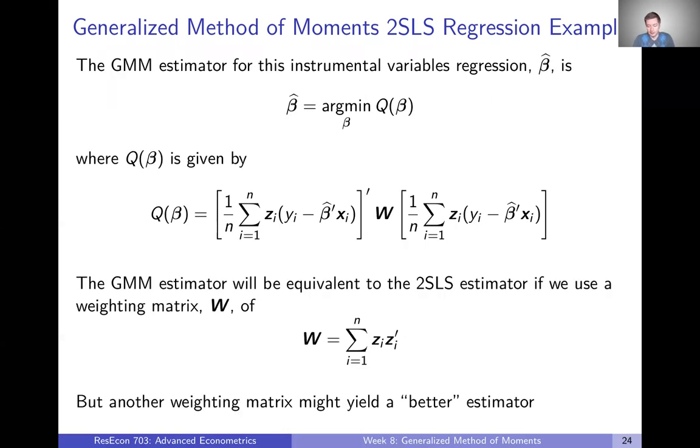Now, I think this highlights the fact here that our objective function depends on W. So our beta hat is going to depend on W. If we use a different weighting matrix, we are going to get a different GMM estimator. For every weighting matrix we plug in here, we are going to get a different GMM estimator. Maybe they're only going to be slightly different, but they will be different.